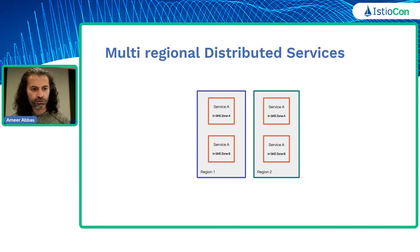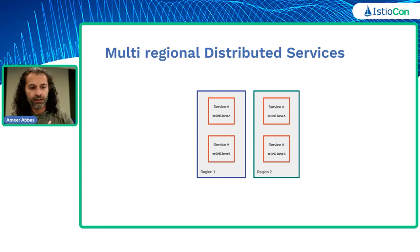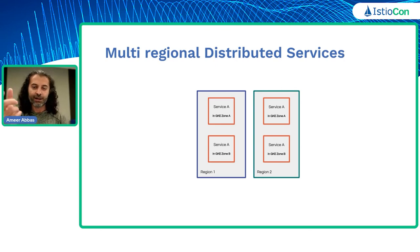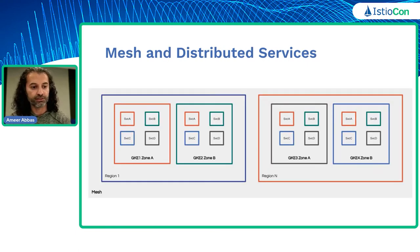This four-cluster model — two zonal clusters in one region across different zones, two zonal clusters in region two — can be replicated to as many regions as needed. Internally we call this multi-regional distributed services, where a distributed service means a single Kubernetes service running in more than one cluster. In this case, service A is a distributed service running across all four clusters.